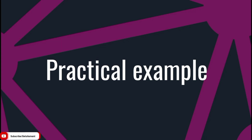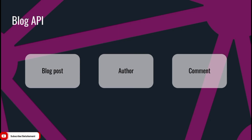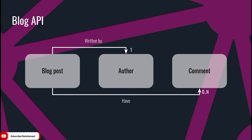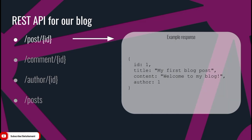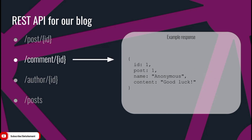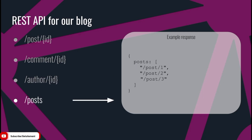Let's assume that we have an API for a blog. Our blog contains three types of objects: blog posts, authors, and comments. Blog posts are written by a single author and blog posts might have one or more comments. With the REST principle, you would start by creating a single endpoint per entity — one to get blog post details with title and contents, one for comment details, one for author details with name and email, and a fourth endpoint that returns a list of blog post IDs.